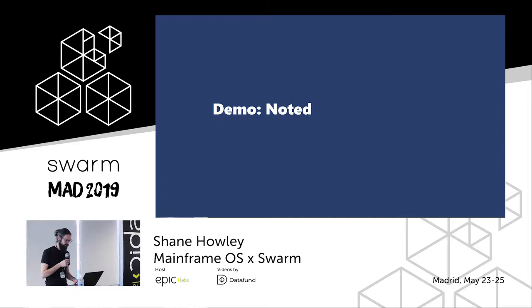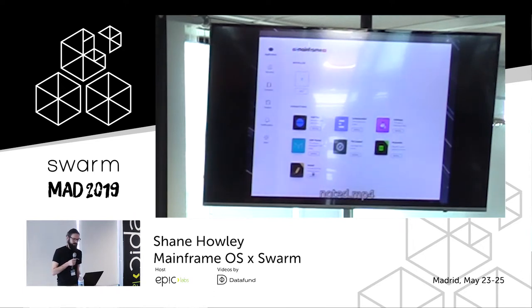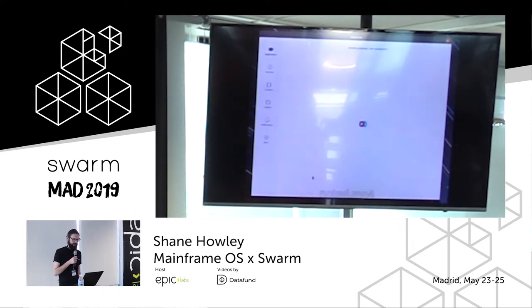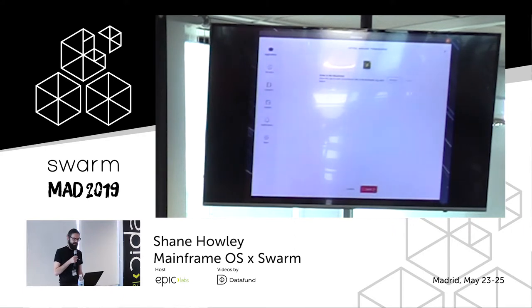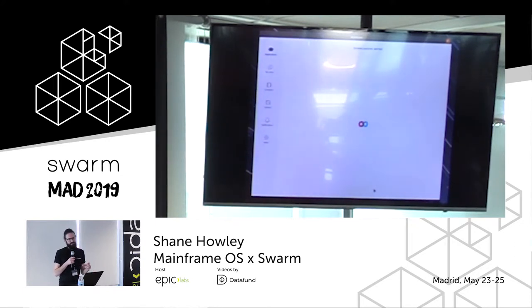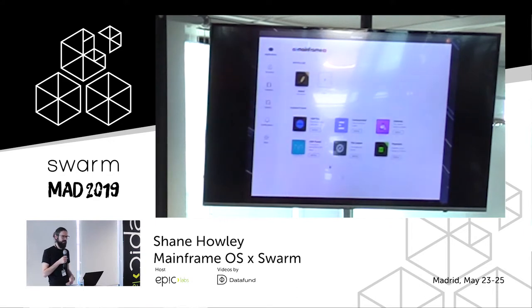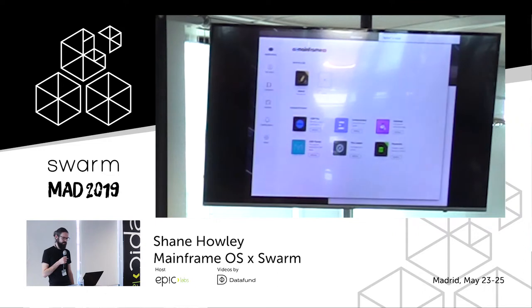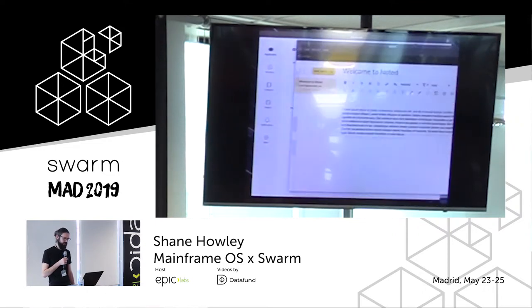I'm going to show you one of the basic dApps and how it uses storage. This is a dApp we created called Noted — it's a simple note-taking app. If you want to install a dApp, you click Install. It shows you what permissions the dApp requires before you install, and if you accept, you can download the dApp from Swarm. It stores a copy on your local disk and then you can open it. dApps run inside their own sandboxed windows.